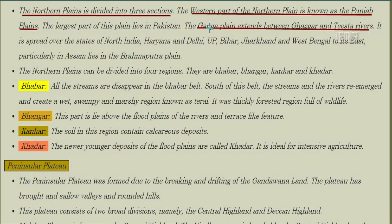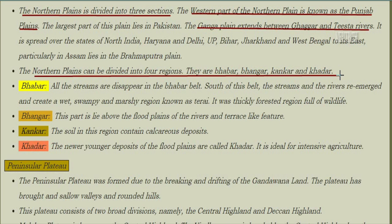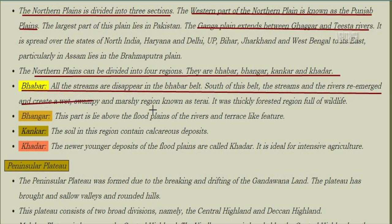The northern plains are divided into three sections. The western part is known as the Punjab plains, with the largest part lying in Pakistan. The Ganga plain extends between the Ghaggar and Teesta rivers, spread over the states of Haryana, Delhi, UP, Bihar, Jharkhand, and West Bengal. To its east, particularly in Assam, lies the Brahmaputra plain. The northern plains are further divided into four sub-regions: Bhabar, Bhangar, Khadar, and Terai.